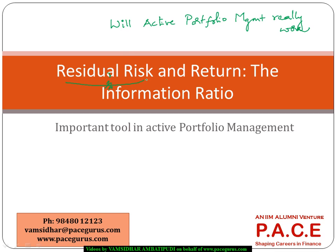From that standpoint, what we are looking at is: how do I really assess what should be an optimal level of additional risk that I should take? And how much additional return can I expect? That is why we call it residual risk and residual return — what is that additional risk I can take where I can get compensated with additional return? We also talk about the computation of the information ratio, which is one of the important tools in active portfolio management.